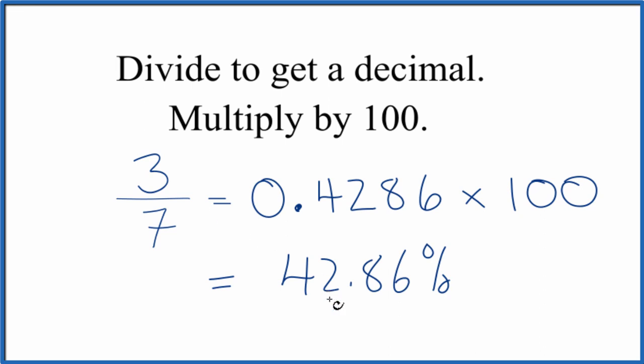So 3/7, the fraction, is equal to 42.86 percent. 3 is 42.86 percent of 7.